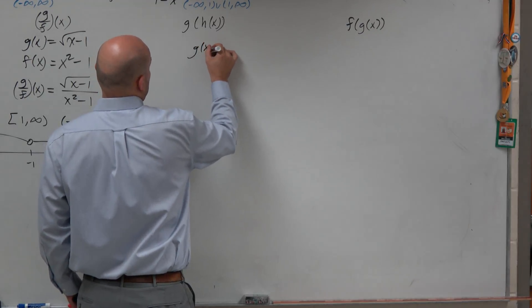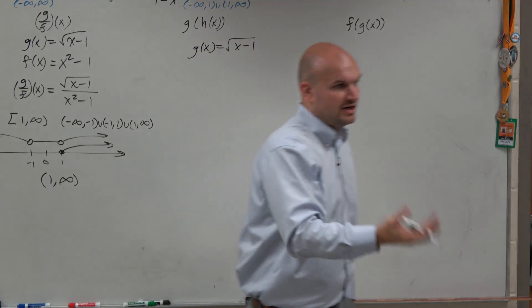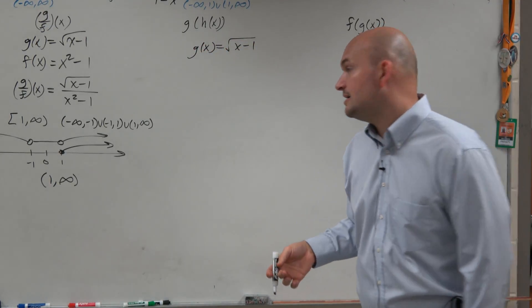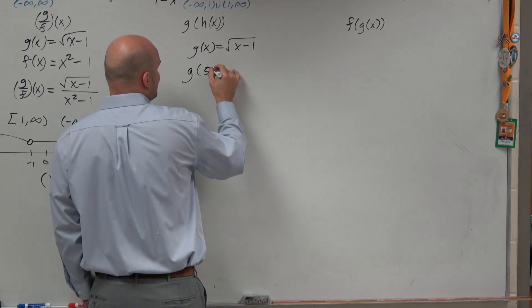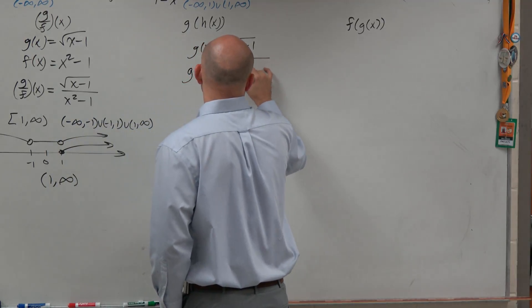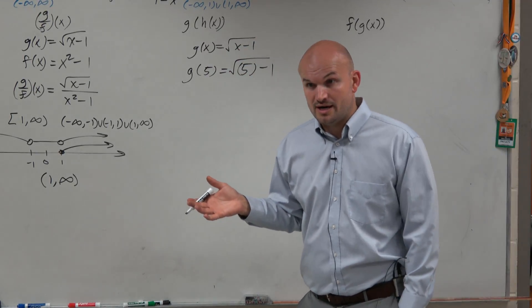But we have g of x equals square root of x minus 1. Something that we've already talked about in this class or worked on is if I want to evaluate g of 5, then you just plug in the 5 for the x, correct? Yes, right?